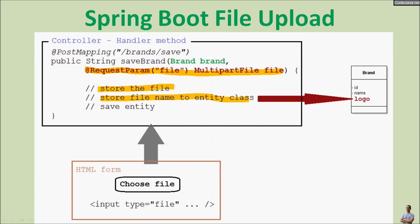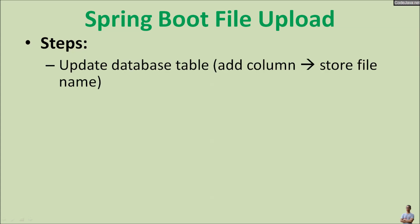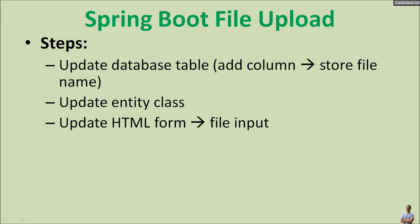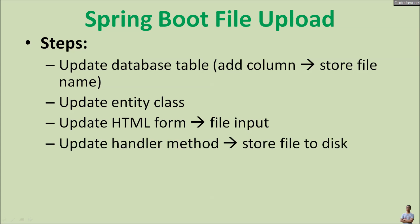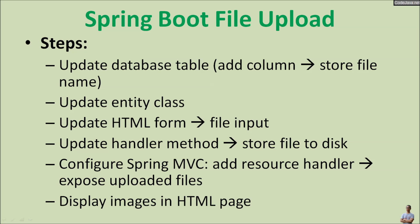We store the file into the file system on the server and store the file name to the entity class. The entity class has a field that stores the file name — for example, for brand we have the column name logo. Then we save the entity to the database. The steps are: update the database table adding a column to store the file name, update the entity class, update the HTML form to display a file input, update the handler method to store the file to disk, and configure Spring MVC adding a resource handler to expose the uploaded files.